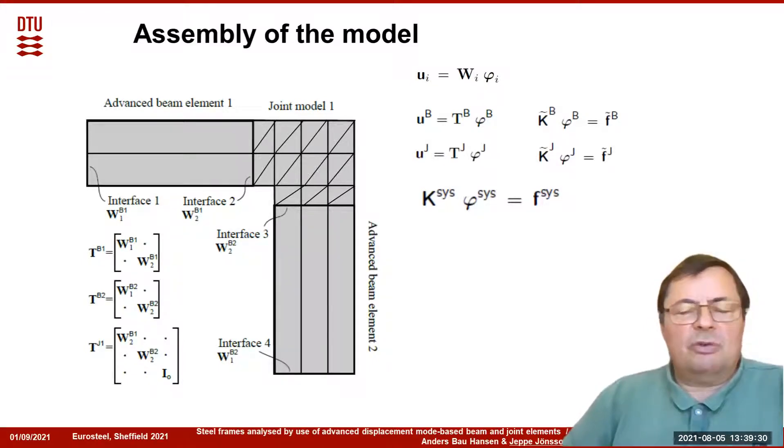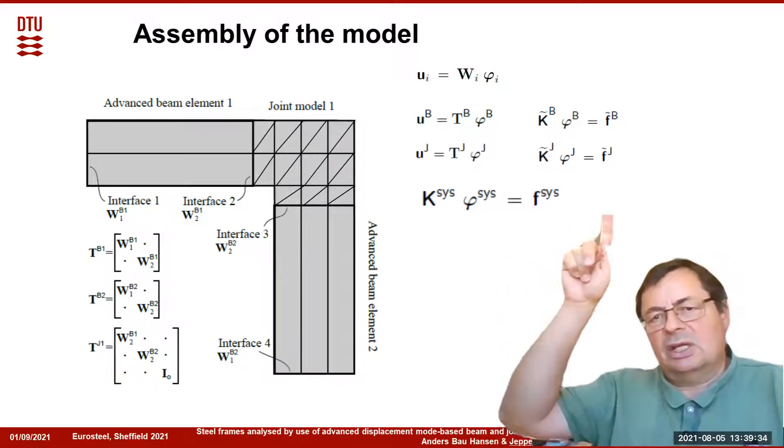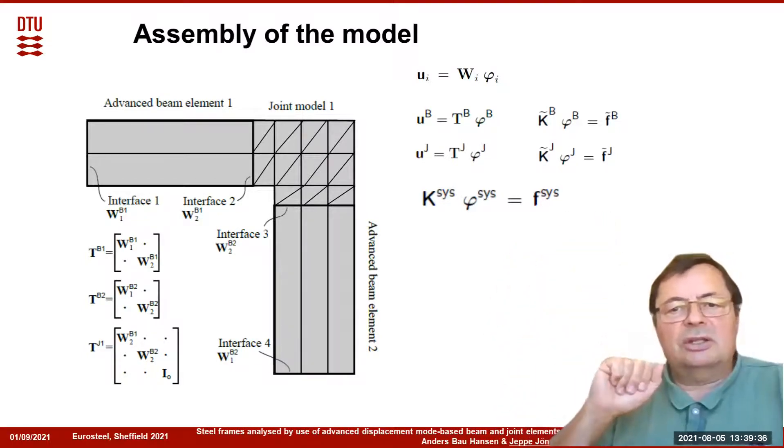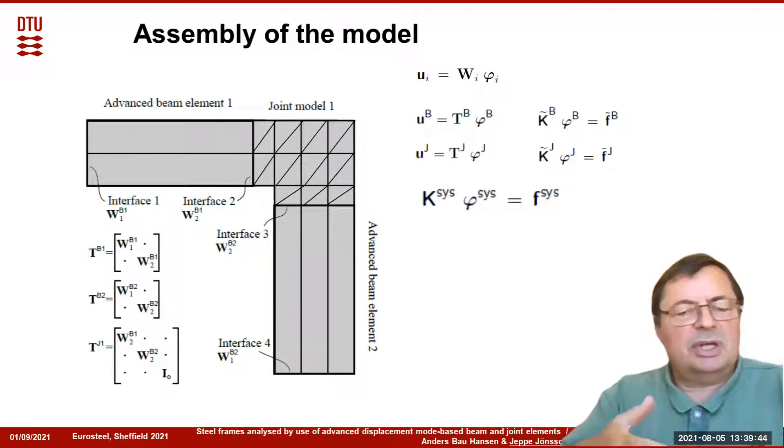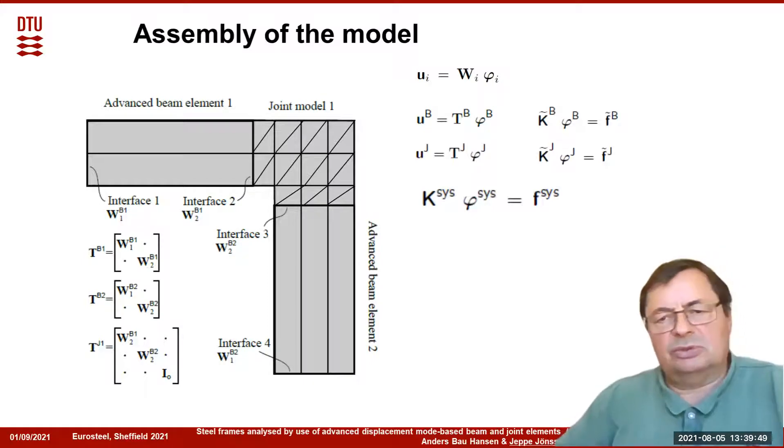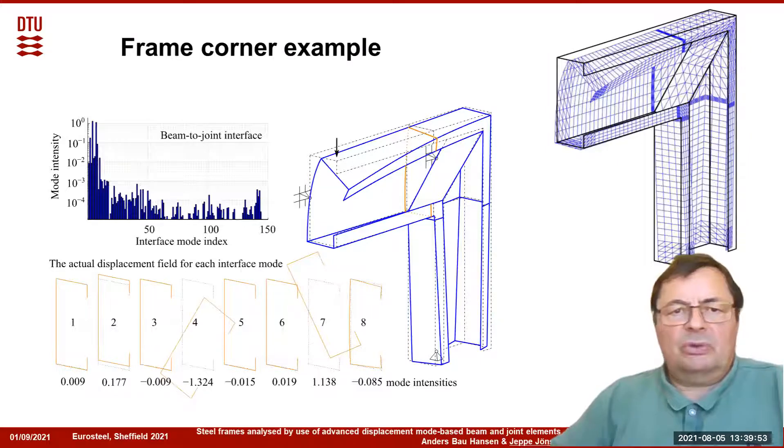We can use all the modes or just part of the modes, and this transformation will still be good enough. We use the transformation of the end section nodes of the beams and transform the degrees of freedom of each end to the modal degrees of freedom. The same we do for the joint. We can assemble the system matrix where the unknowns or degrees of freedom are the modal shapes at the interfaces, plus perhaps some internal degrees of freedom of the joints.